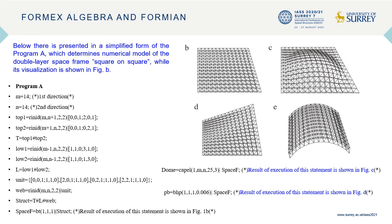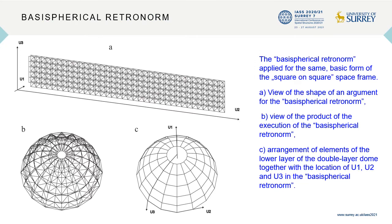Its other shapes are defined by application of specific functions and by specific retronomes. The same basic shape of the square-on-square space frame can be easily transformed into a spherical shape by application of the basispherical retronome.